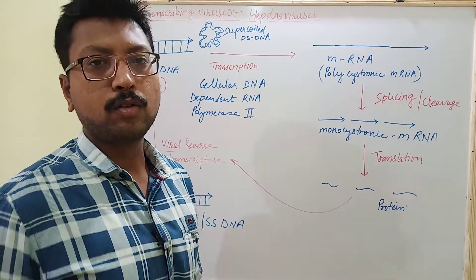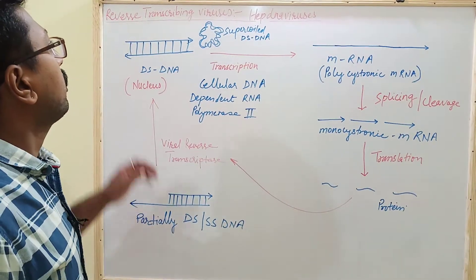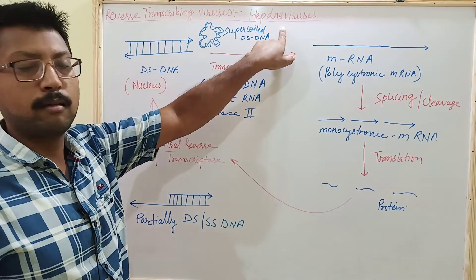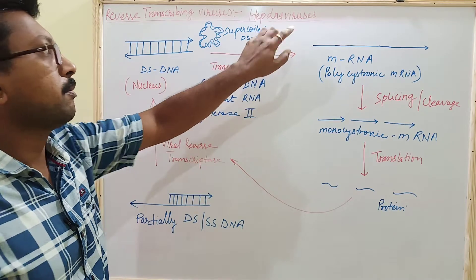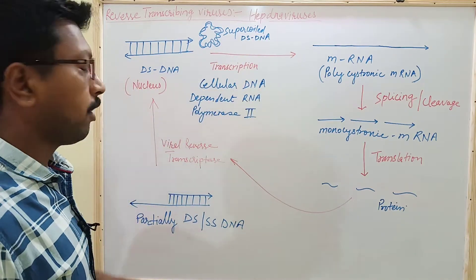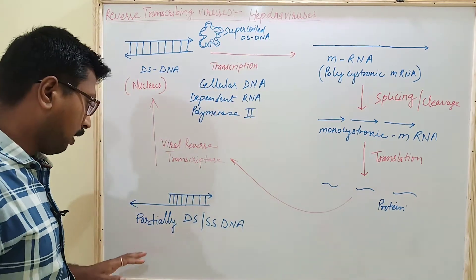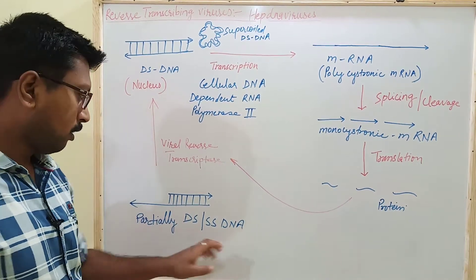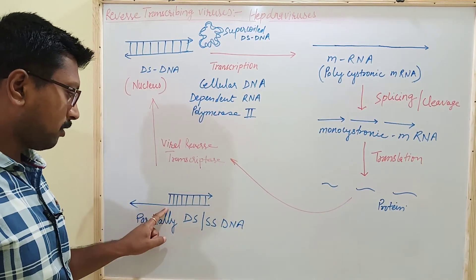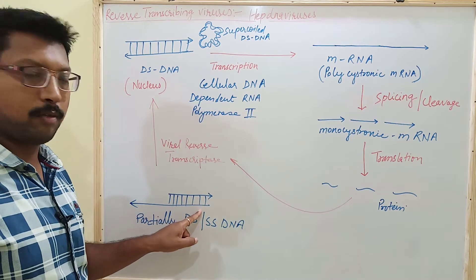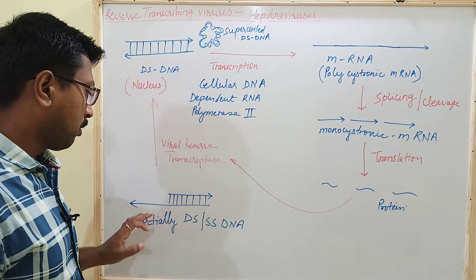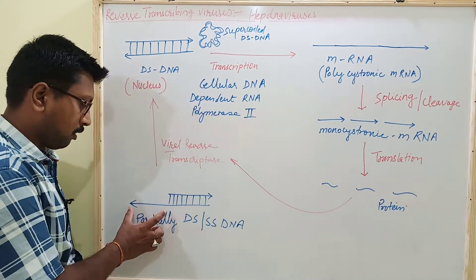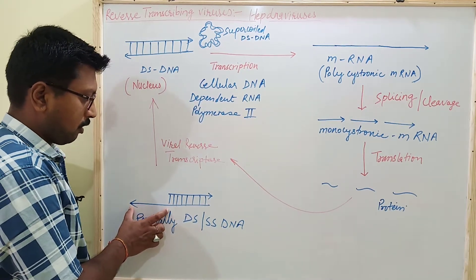The next topic is replication in the case of reverse transcribing viruses, that is hepadnaviruses. In the case of hepadnaviruses, the genome is partially double-stranded and partially single-stranded DNA. This partially single-stranded and partially double-stranded DNA is formed here.